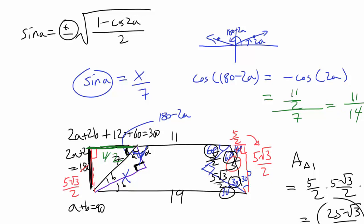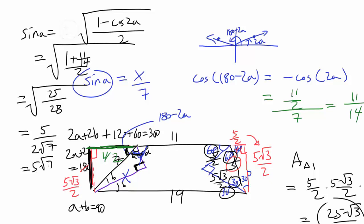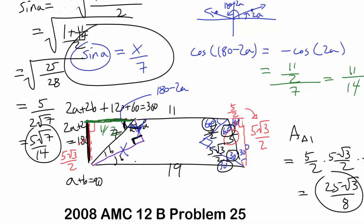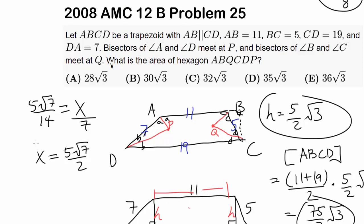Our A cannot be obtuse because it is in a right triangle — it must be acute — so sin(A) is positive and equals 5√7/14. Since sin(A) = X/7, we get X = 7 × (5√7/14) = 5√7/2. Now we can find Y using the Pythagorean theorem: Y = √(49 − X²) = √(49 − 175/4) = √((196 − 175)/4) = √(21/4) = √21/2.